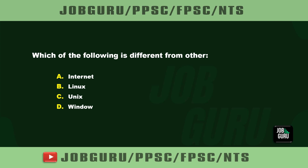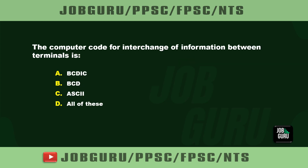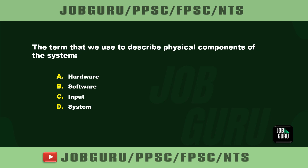Which of the following is different from the others? The computer code for interchange of information between terminals is — the term that we use to describe the physical components of the system is?